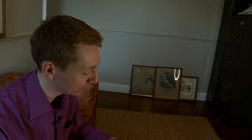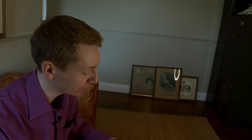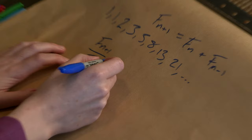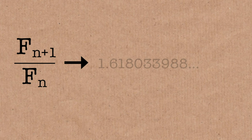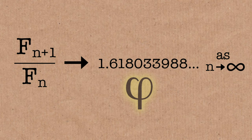If you take two consecutive Fibonacci numbers and divide the big one by the small one, then this will tend to a number which is 1.618033988 something something something. People will know that this is a special number, this is called the golden ratio, which is this symbol.